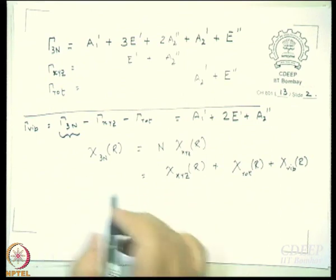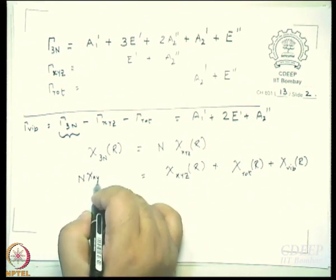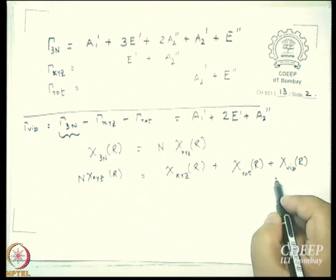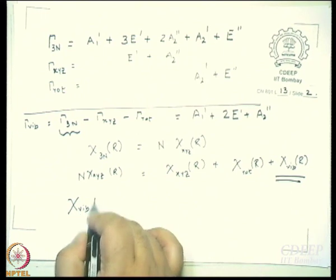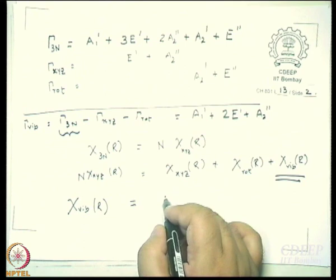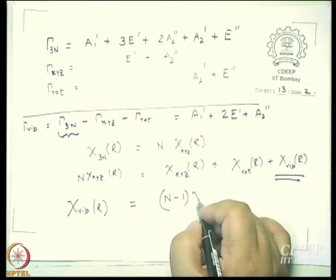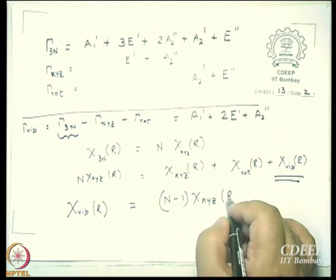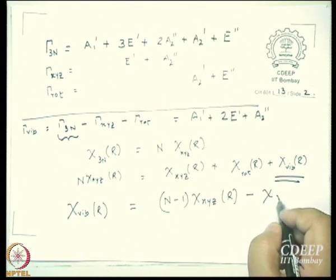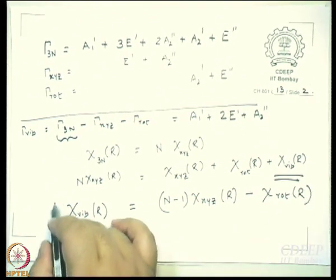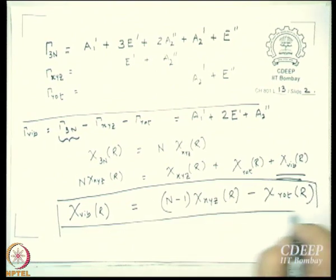So now, is it easy to simplify a little bit? I will write this here: n · χ_xyz(r) equals that expression. What do I want? So can I not write χ_vib(r) = (n−1) · χ_xyz(r) minus χ_dot(r)? That is a simpler formula, isn't it?